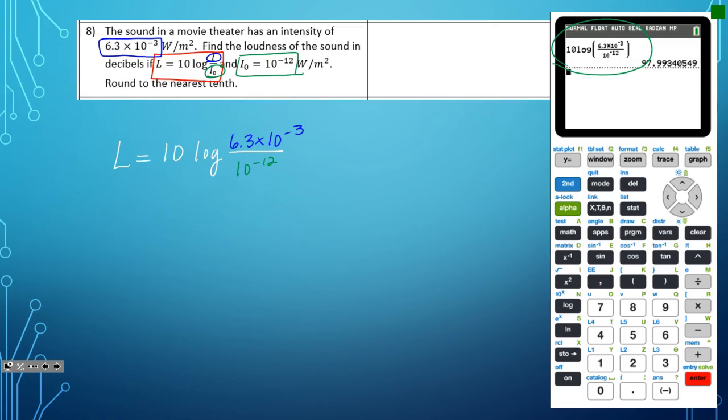And now it asks us to round our answer to the nearest tenth. So I have 97.9, but I have a nine after that nine. So this is actually going to get rounded up to a whole number or 98. So I'm going to write 98.0, and that would be in decibels for our final answer. Okay. Thank you.